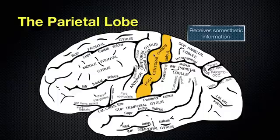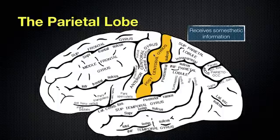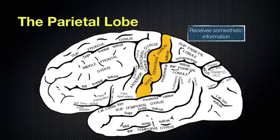There's processing that happens there for us to be able to recognize movements of the body. And when we get touched, we can feel that because of the processing happening right here. The left postcentral gyrus is going to be getting information from the right side of the body, and the right postcentral gyrus is going to be receiving information from the left side of the body.